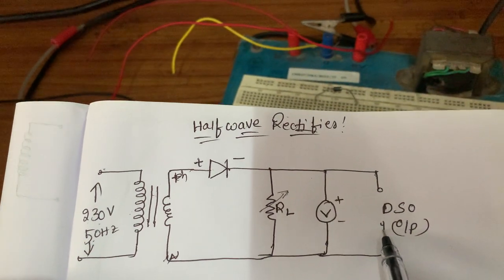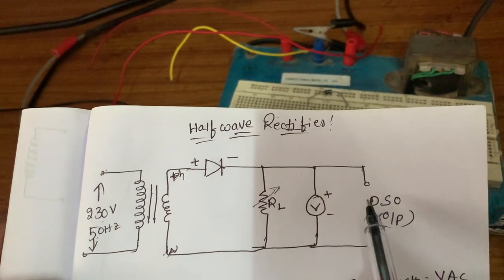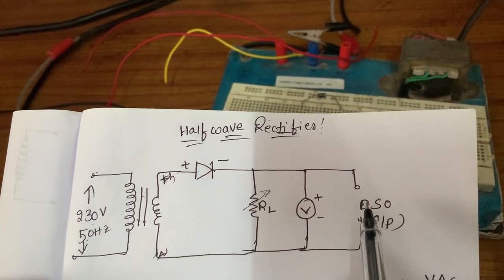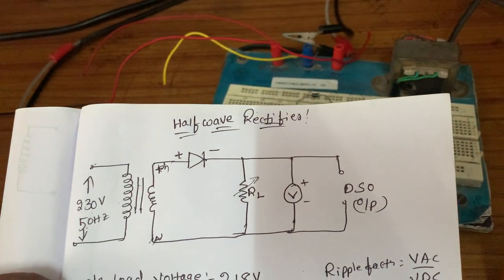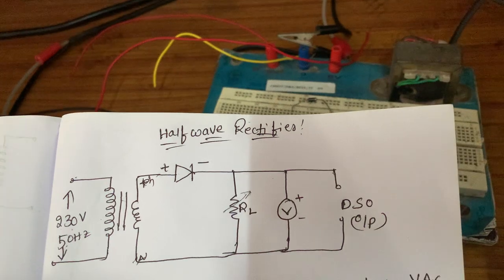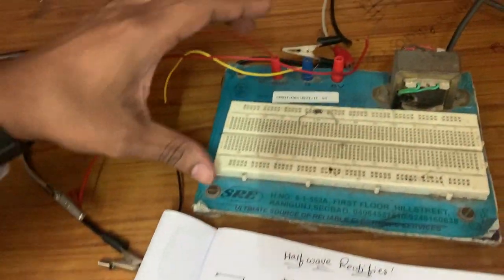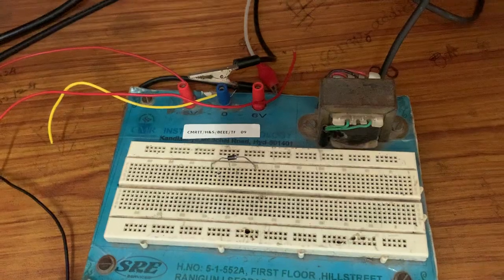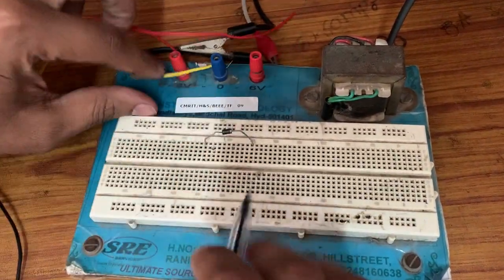This is called a DSO — Digital Storage Oscilloscope. This DSO is used to see the output waveforms. Now let's connect the circuit and we will see how we will get the waveform.